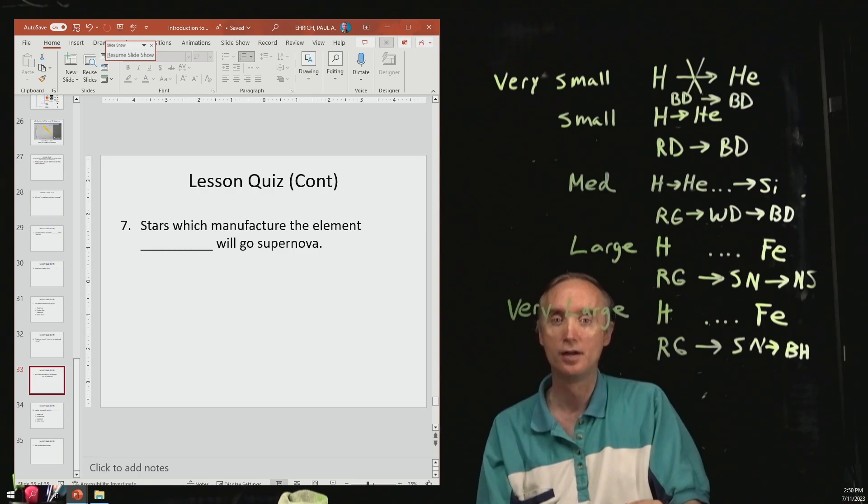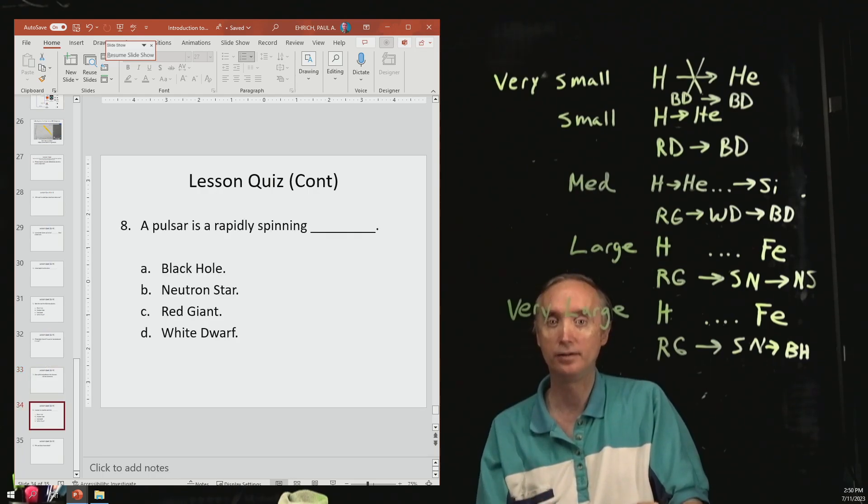Number seven, stars which manufacture the element what will go supernova? Iron. Number eight, a pulsar is a rapidly spinning neutron star.